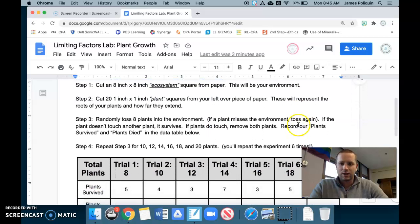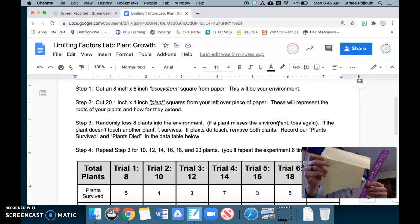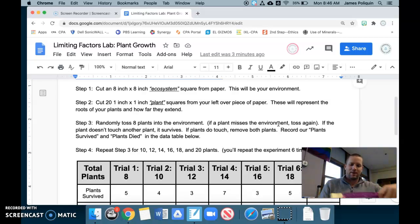Step one, we're going to cut an eight inch by eight inch ecosystem square from our paper. So you can measure eight inches from your paper, eight inches down, eight inches across. What's nice about an eight by eleven and a half is that it's already eight inches one way. All you have to do is cut it the other. So about eight inch by eight inch, that'll be your ecosystem.